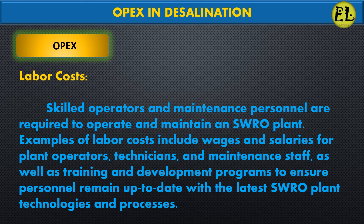Labor costs: skilled operators and maintenance personnel are required to operate and maintain an SWRO plant. Examples of labor costs include wages and salaries for plant operators, technicians, and maintenance staff, as well as training and development programs to ensure personnel remain up-to-date with the latest SWRO plant technologies and processes.